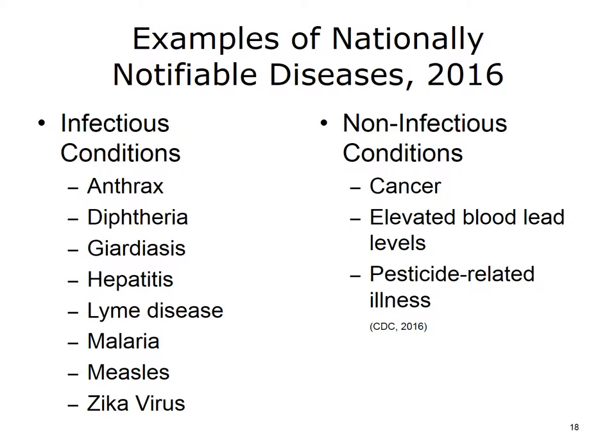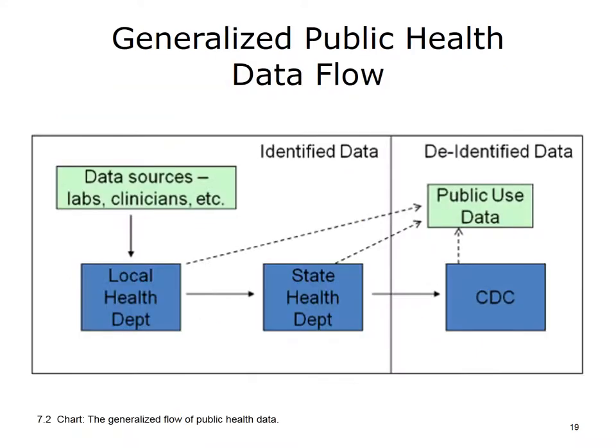Some examples of nationally notifiable diseases listed on this slide include anthrax, hepatitis, Zika virus, cancer, and pesticide-related illnesses. Note that these are only a handful of the total infectious and non-infectious conditions which are NNDs.